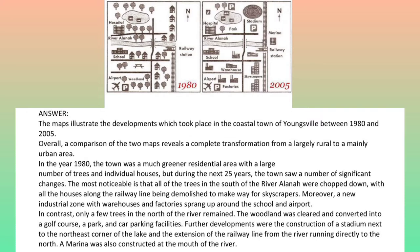In the year 1980, the town was a much greener residential area with a large number of trees and individual houses, but during the next 25 years the town saw a number of significant changes. The most noticeable is that all of the trees in the south of the River Alina were chopped down, with all the houses along the railway line being demolished to make way for skyscrapers. A new industrial zone with warehouses and factories sprang up around the school and airport.